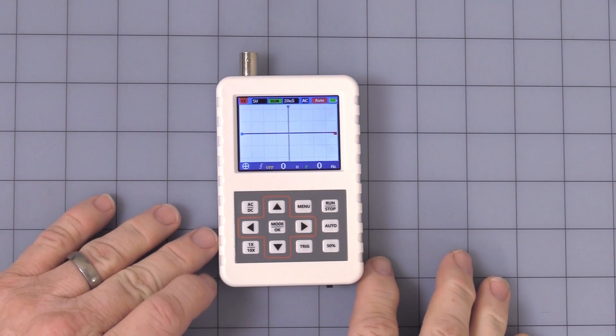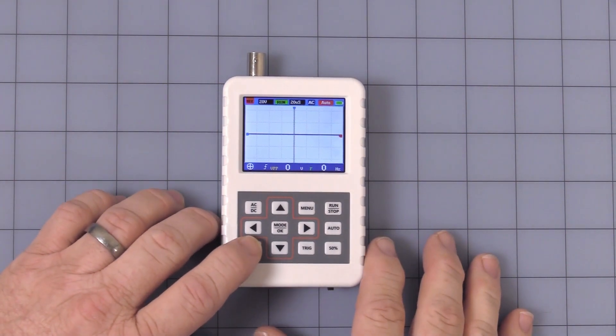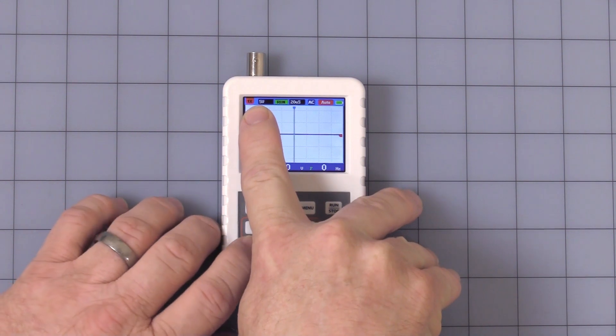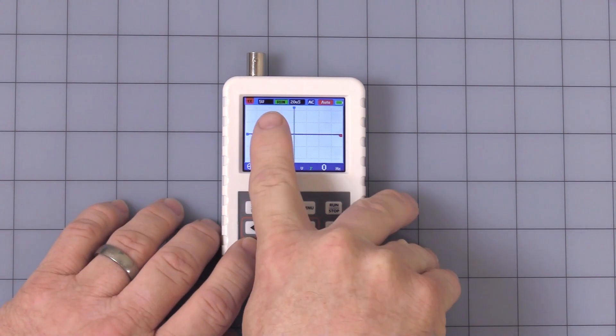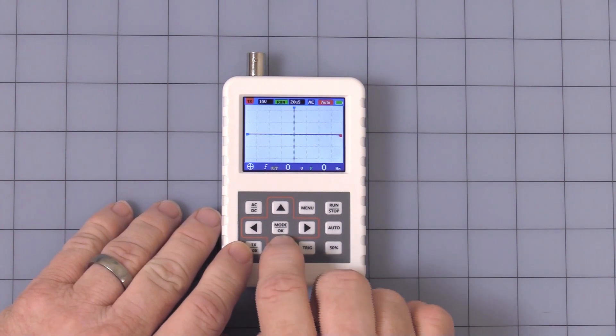In the lower left hand corner you have 1X, 10X. That does not affect sensitivity. As you can see here, it changes from 1X to 10X there. That simply, it is kind of a little safety feature. It keeps you from putting your voltage too high.